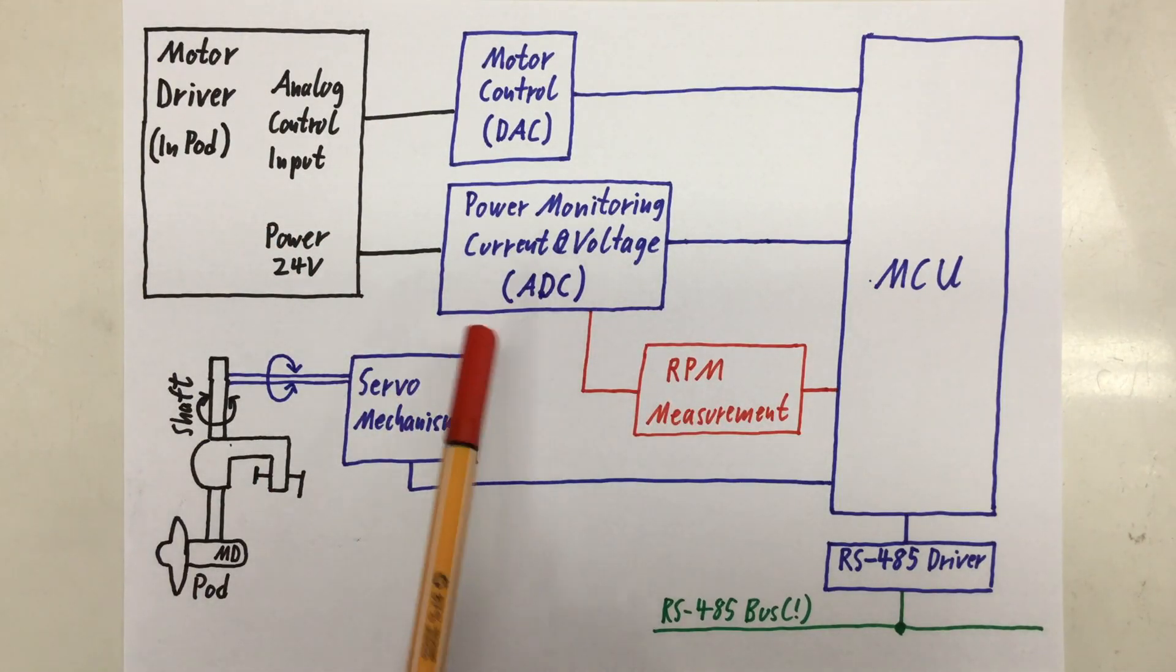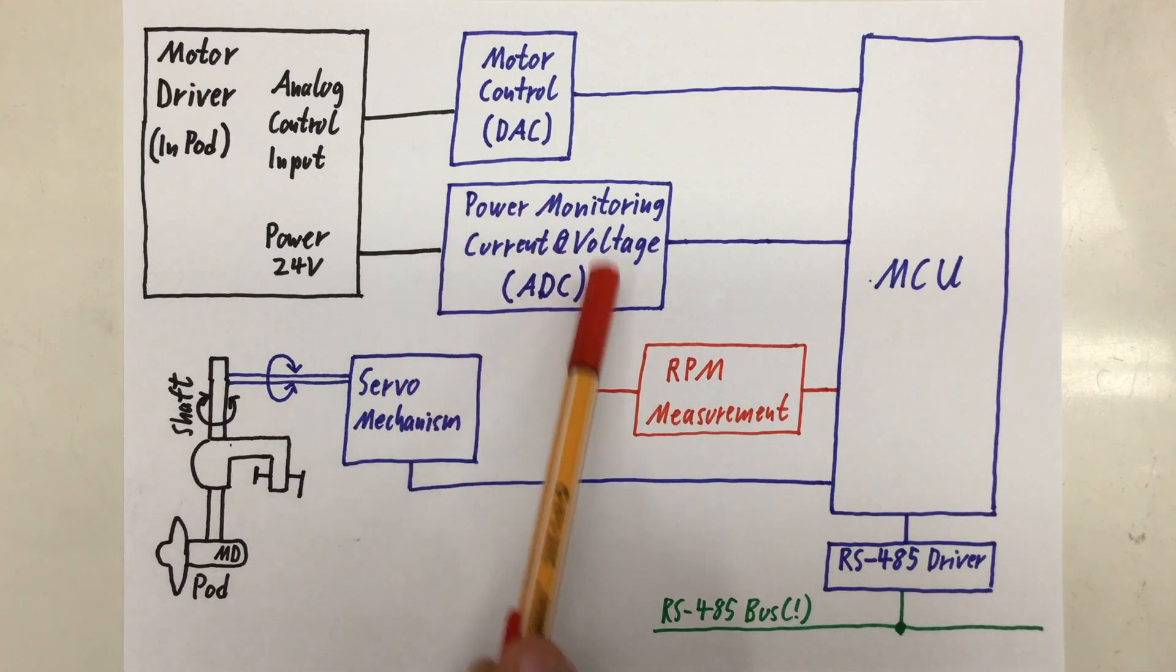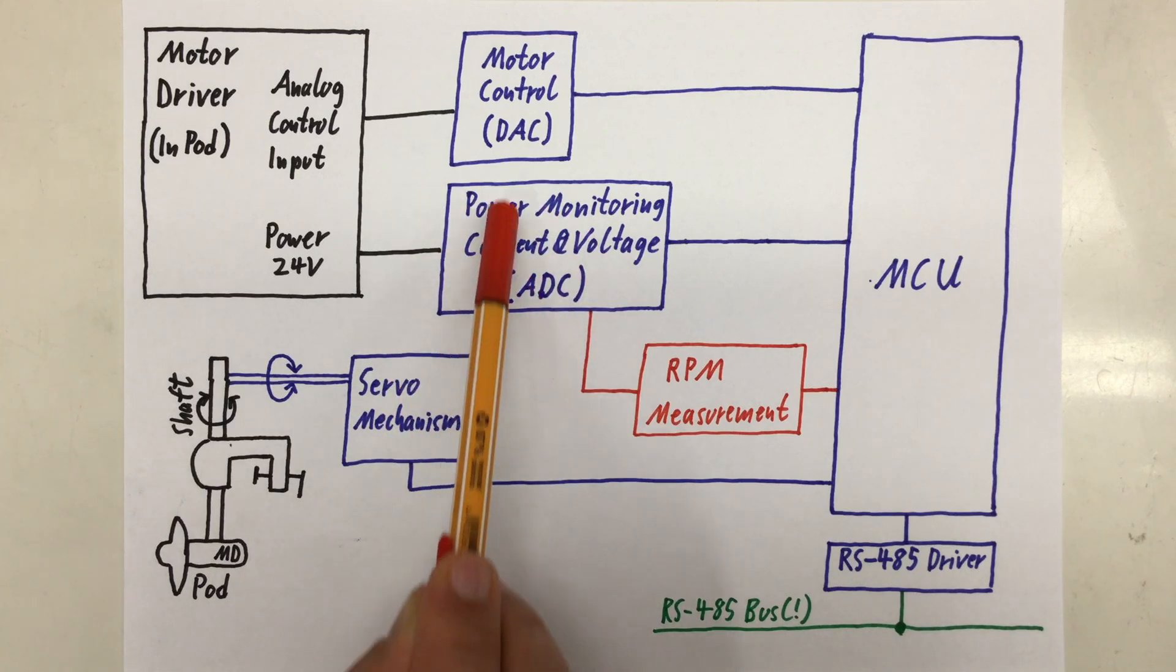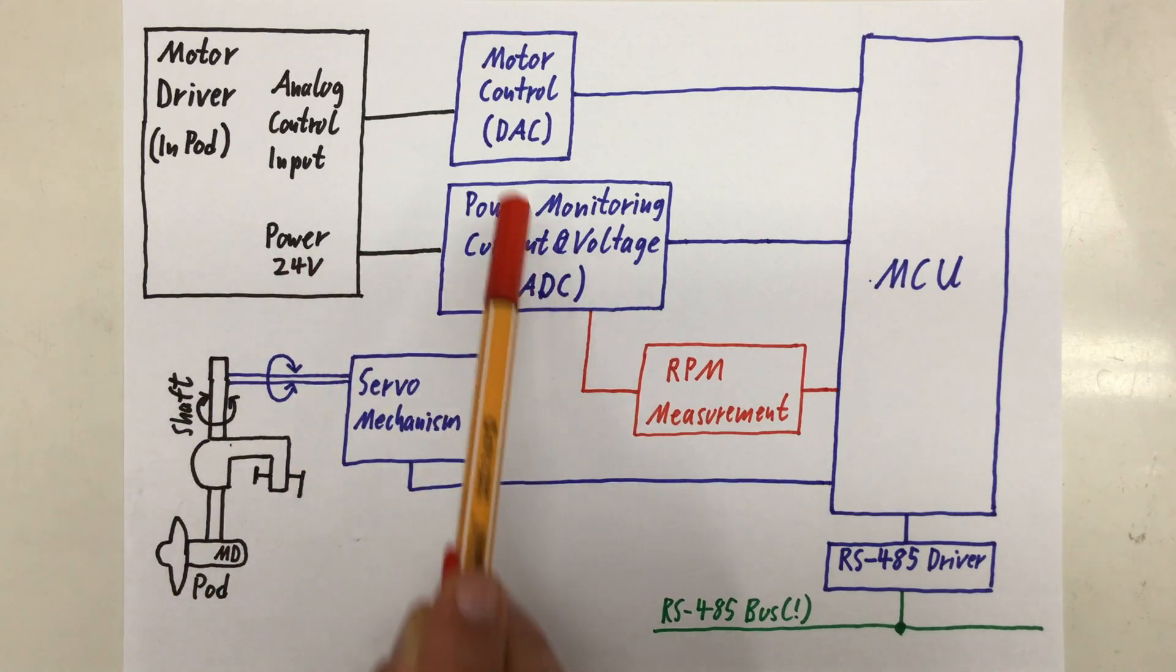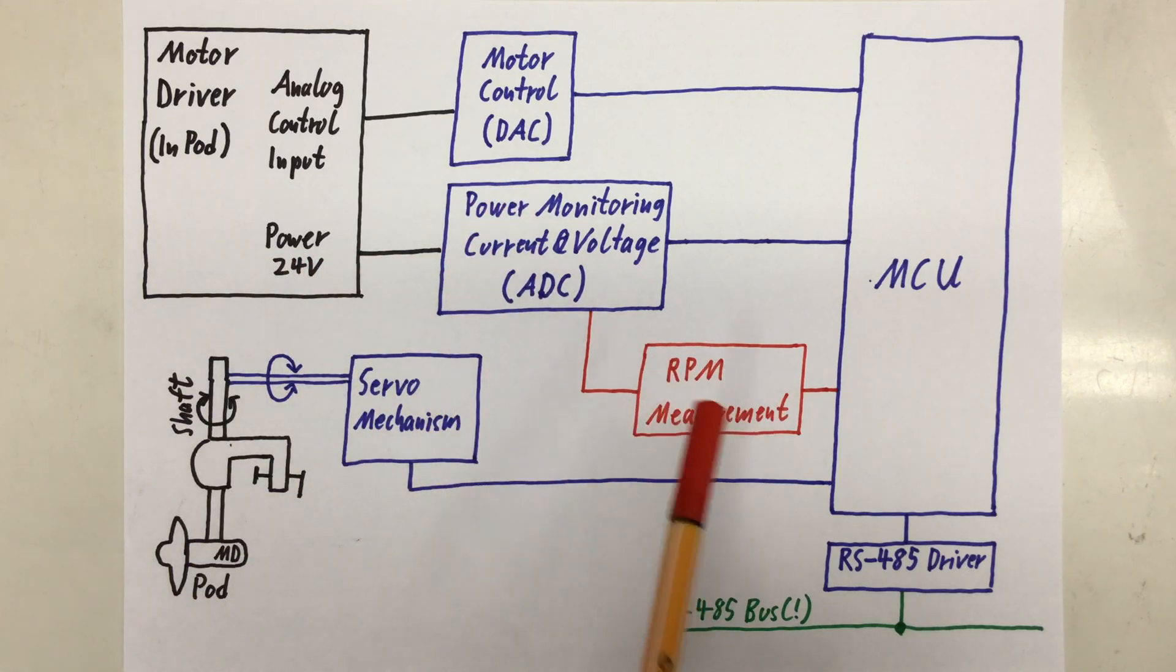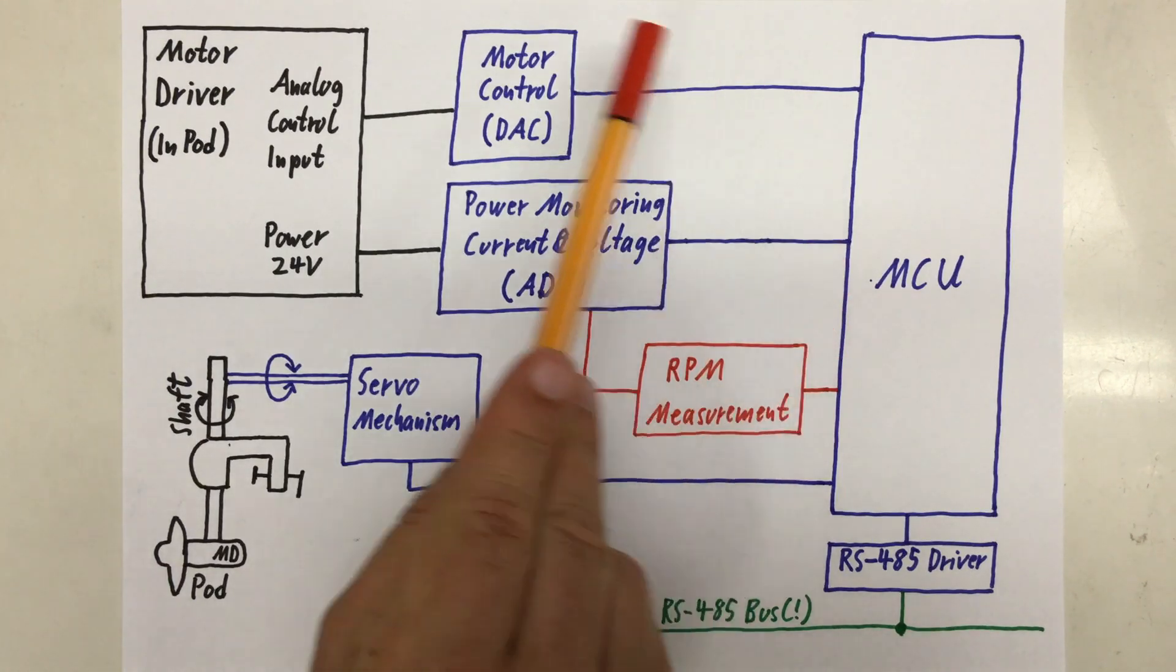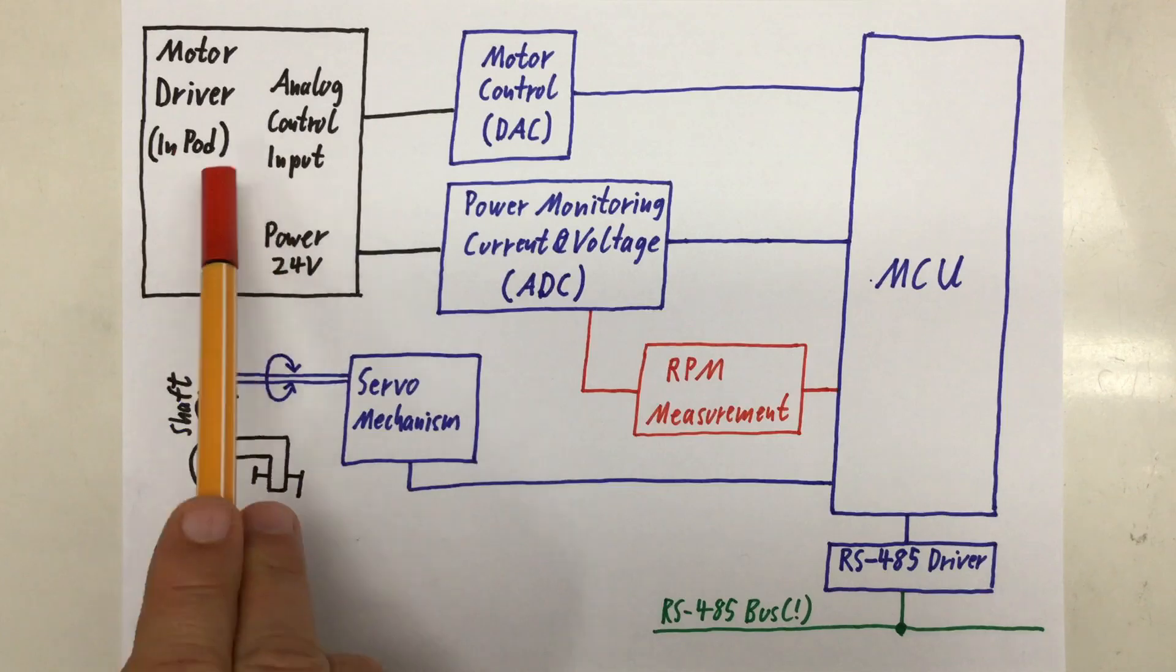I also have that pipe dream about using the current measurements, because there is some AC component overlaid over our DC current, to measure the RPM of the motor. But I'm still a little bit unclear how I want to do that. But anyway, if that works out, our MCU gets also digital data about the motor's RPM. So far, we covered all the motor stuff.